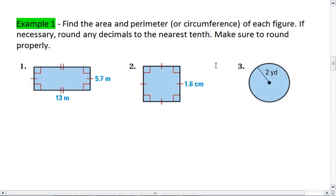Example 1: Find the area and perimeter or circumference of each figure. If necessary, round any decimals to the nearest tenth. Make sure to round properly.